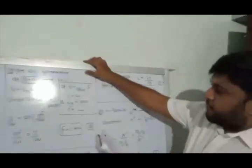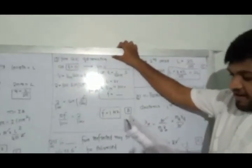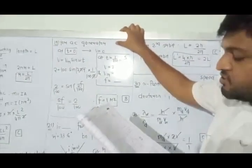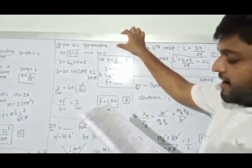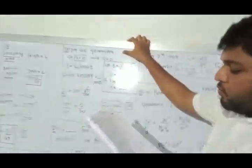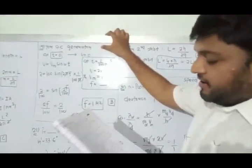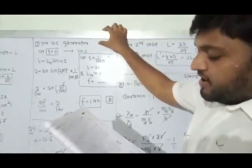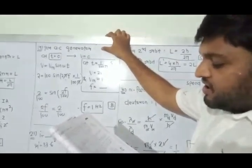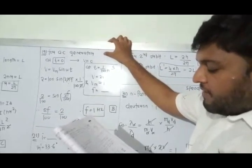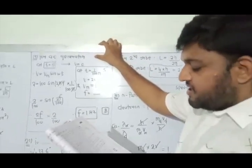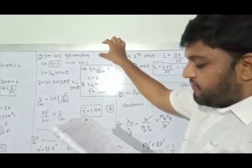Question number 17. At t = 0, voltage of an AC generator starts from 0 V and becomes 2 V at t = 1/(100π) seconds. The voltage keeps increasing up to 100 V (the maximum), after which it decreases. Find the frequency.